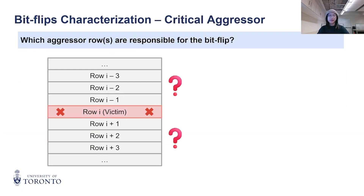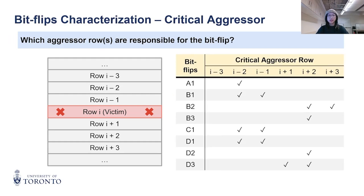After observing bit flips on the A6000, we next identified the critical aggressor rows whose presence is sufficient to trigger a bit flip. We asked: given an observed bit flip, which aggressor rows are responsible? We identified the critical aggressor rows for each flip in this table.